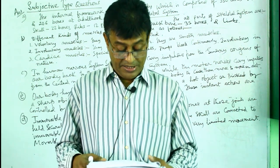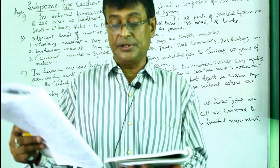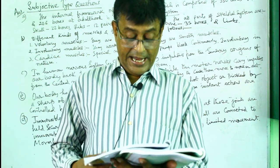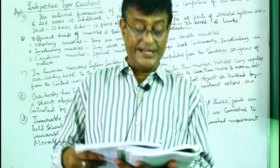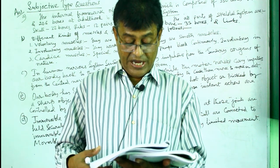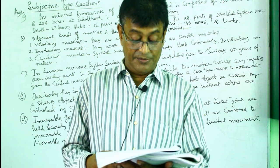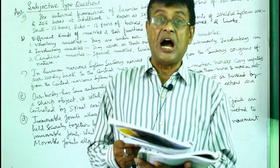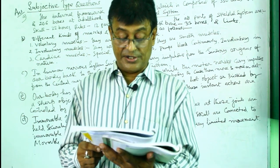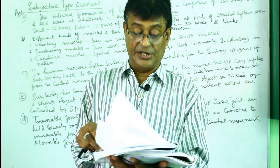Multiple choice answers: Question A - the answer is skeleton (number four); Question B - the answer is brain; Question C - number one, brain, spinal cord and nerve; Question D - iris is the answer (number three); Question E - cerebrum is the answer.